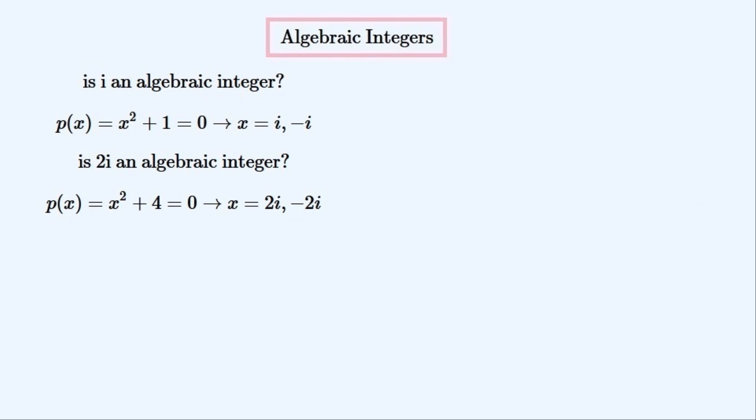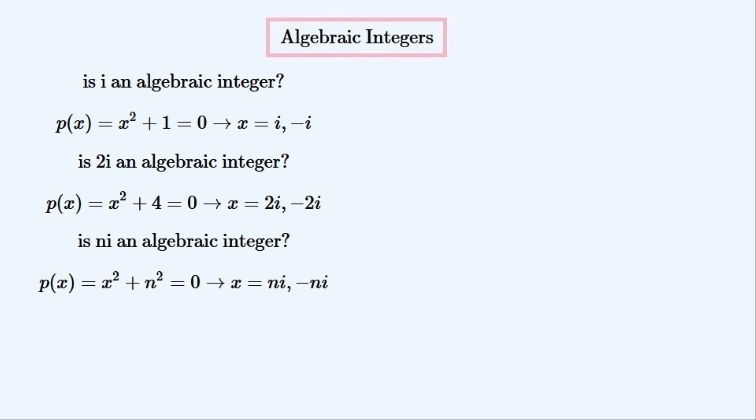So 2i is also an algebraic integer. We can generalize this and say that i times any integer is an algebraic integer, because the monic polynomial that it is a root of is always x squared plus n squared.